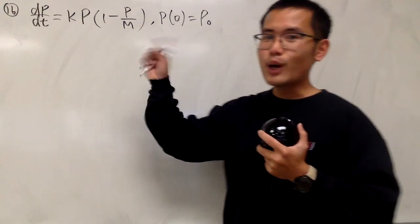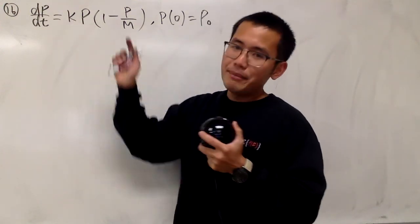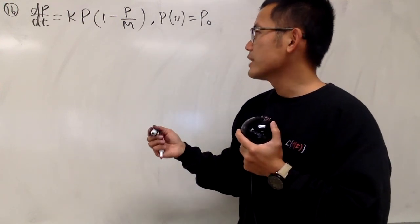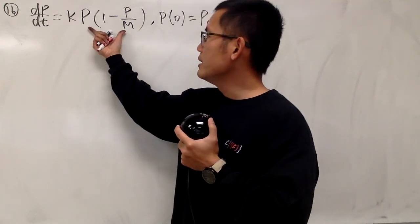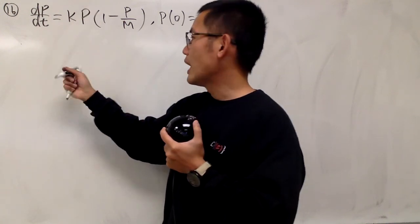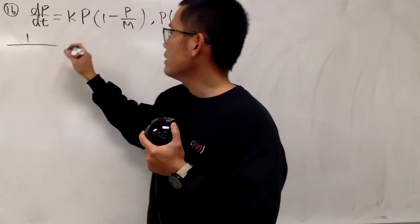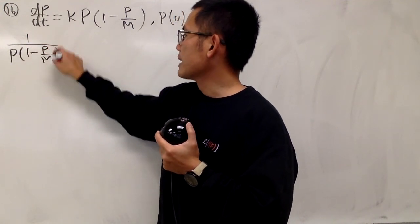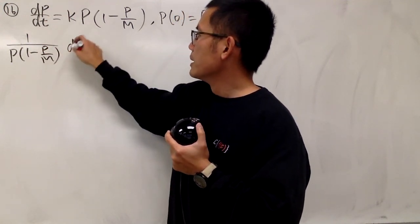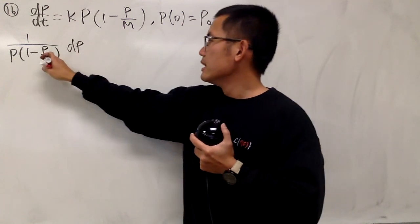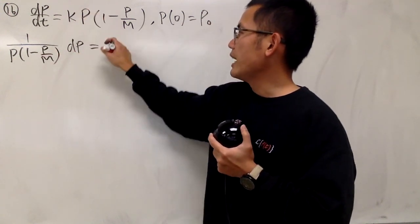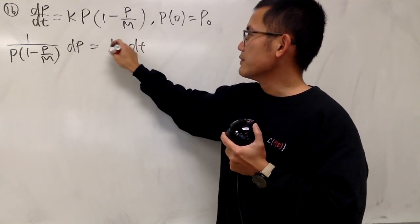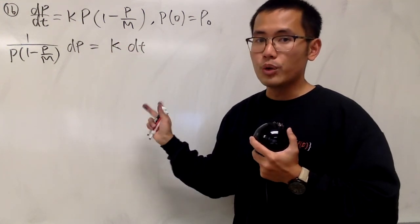Here we go. This is separable. k and m are just constants, so don't worry about that. Now I will bring this to the other side. So I will have 1 over p times (1 minus p/m) dp equals k dt. And remember, any constant is invited in any world, so that's good.